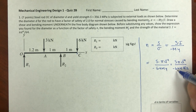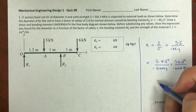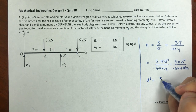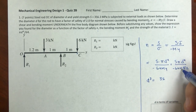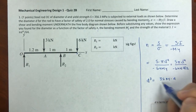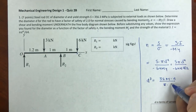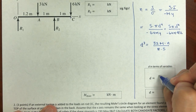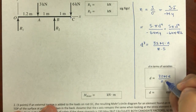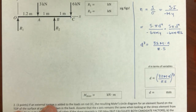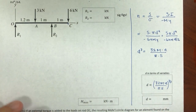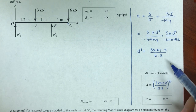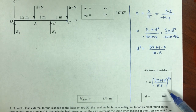Substituting y = D/2 into My/I gives a D³ in the denominator: the 64 over 2 becomes 32. Solving for D cubed gives 32MN over πS, so D equals the cube root of 32MN over πS. This expression is the most important part of this problem because it relates design factors and factor of safety to mechanics of materials.